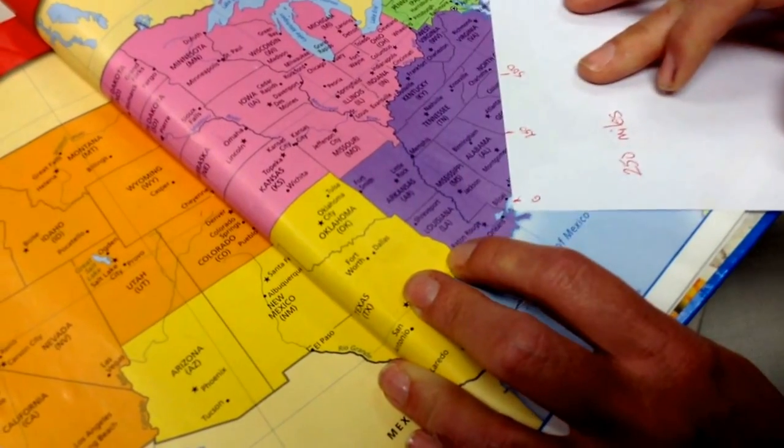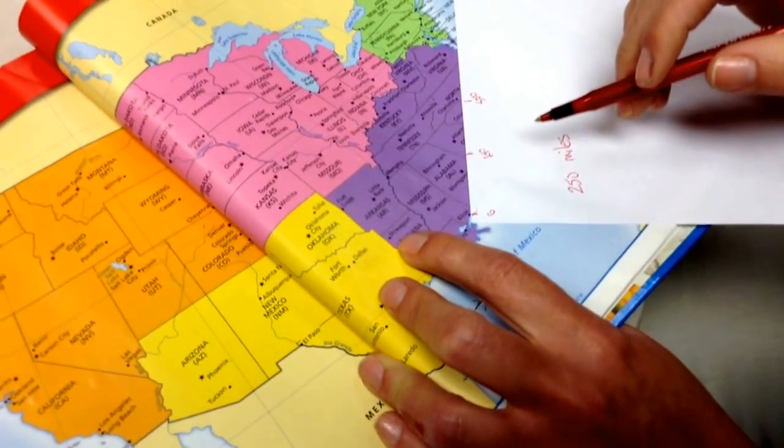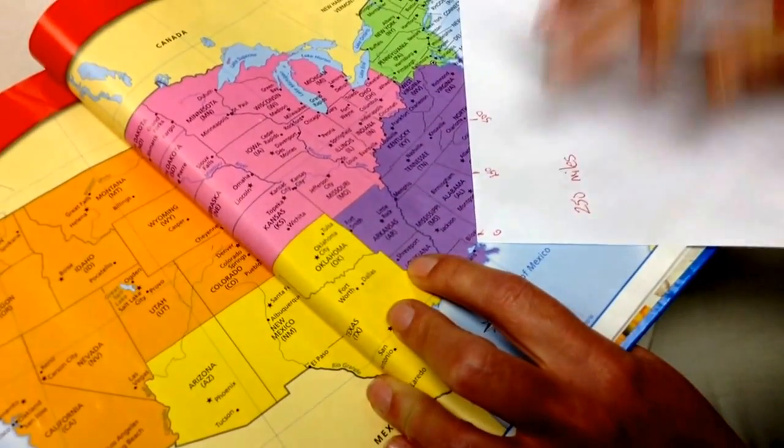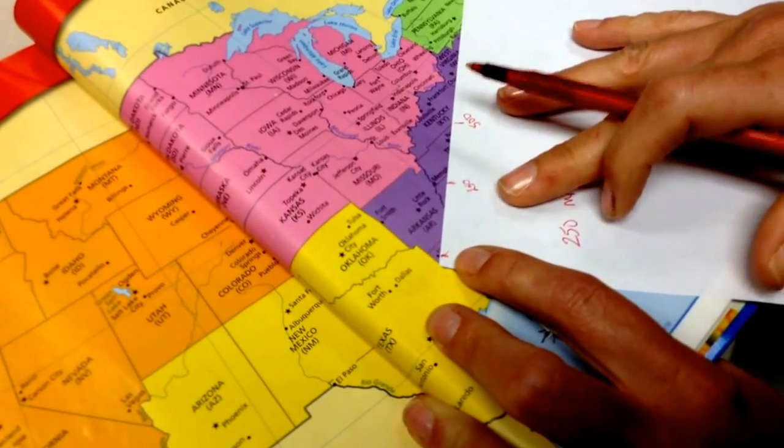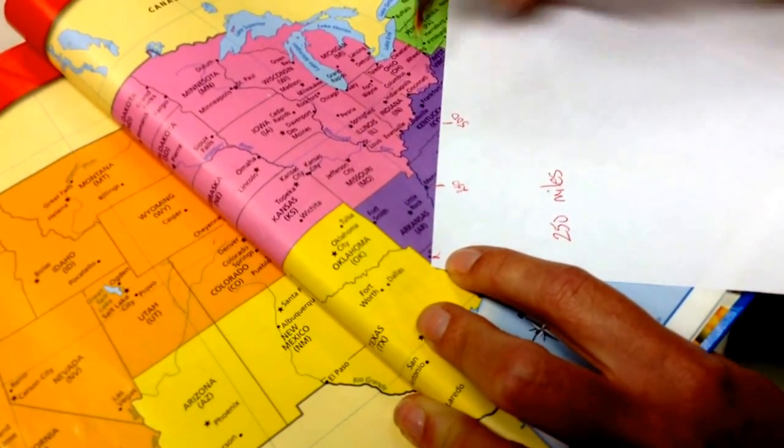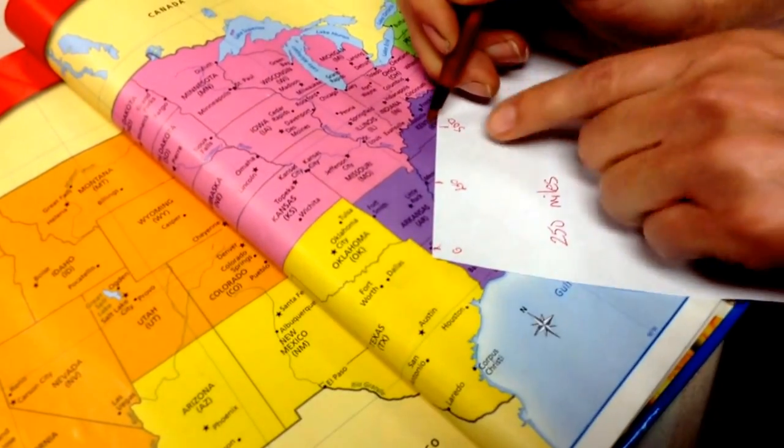Now let's say I want to go farther than that. Let's say I want to go from Shreveport, Louisiana to Charleston, West Virginia. Well, I know from Shreveport to right about here in Kentucky is 500 miles.